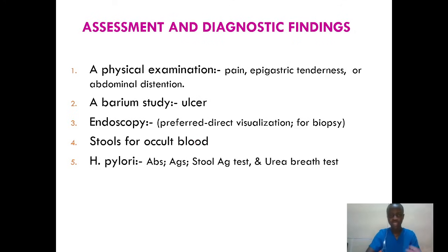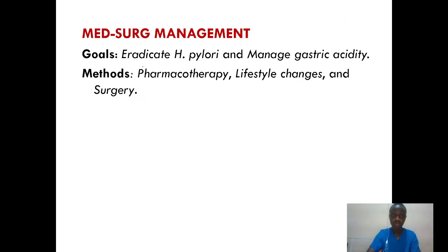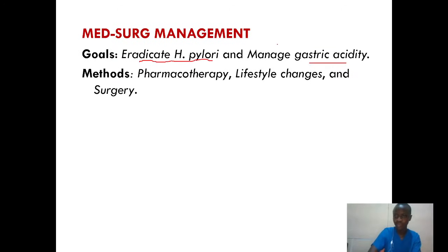Assessment and diagnosis: one, we need to do physical examination targeting pain, and patients will always have epigastric tenderness, or to some point abdominal distension. We can do a barium study, then endoscopy to visualize the GI system well, then stool for occult blood, then H. pylori test to confirm if H. pylori is causing this. The main goal of managing these patients is to eradicate H. pylori and manage gastric acidity.